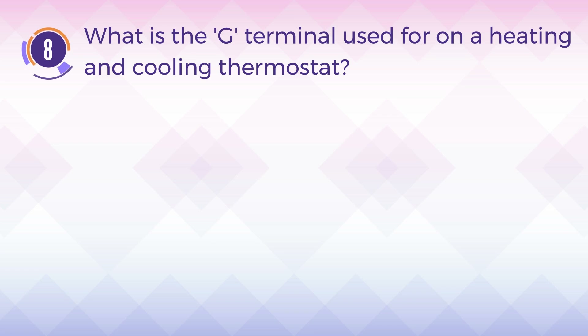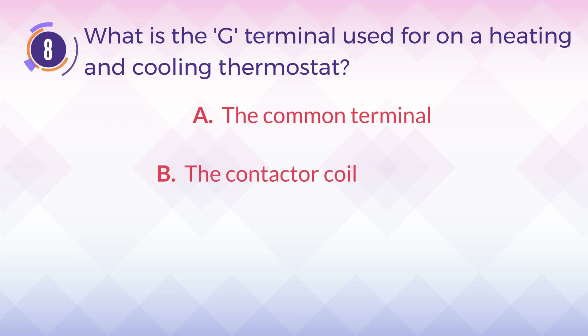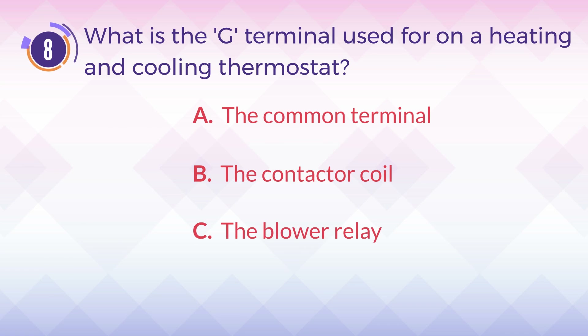Number 8. What is the G-terminal used for on a heating and cooling thermostat? A. The common terminal. B. The contactor coil. C. The blower relay. D. The gas valve.